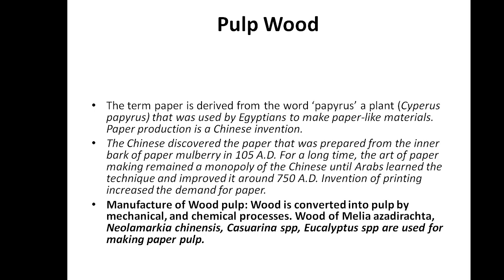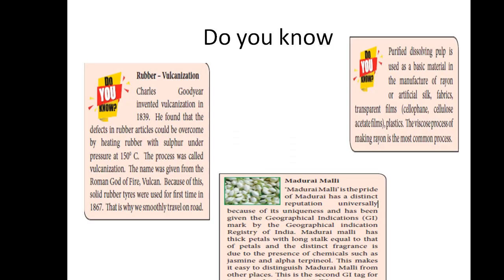Wood of Melia azedarach, Casuarina, and Eucalyptus species are used for making pulp. Eucalyptus and Casuarina are made into pulp. Purified dissolving pulp is used to make rayon or artificial silk, fabrics, transparent films, cellophane, cellulose acetate films, and plastics.